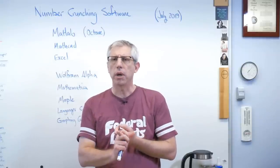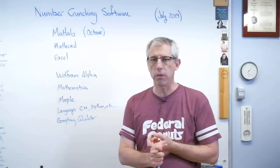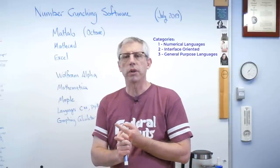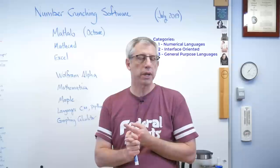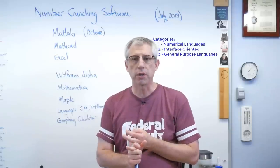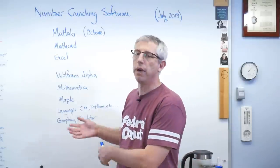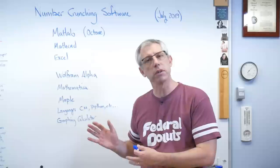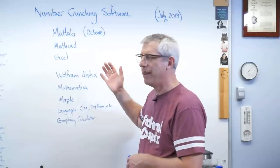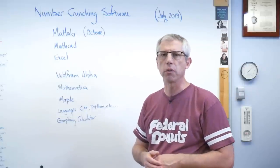One is computational software that's really built around a programming language. One is where the primary feature is kind of the user interface, and the last one is just general purpose software that'll do anything including number crunching. So here's a very admittedly incomplete list, but this is the one I can tell you about and I think there's enough of a spread here you can get a feel for what's available.